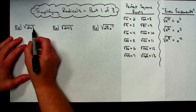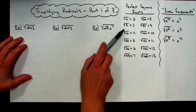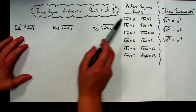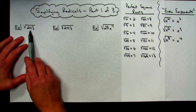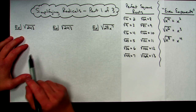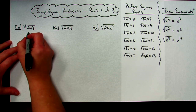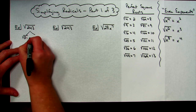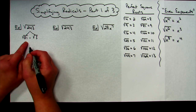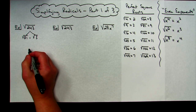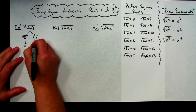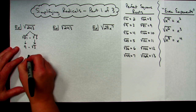Let's simplify the first example: square root of 243. I'm going to find which perfect square root goes into 243 — I want the largest one. Checking the list: 81 times 3 is 243. So I write square root of 81 times square root of 3, always putting the perfect square root first. Square root of 81 is 9, and square root of 3 is already simplified.